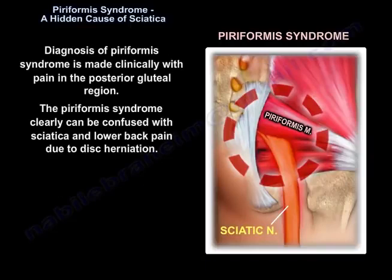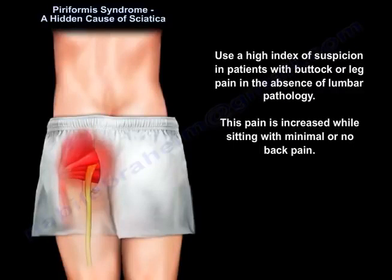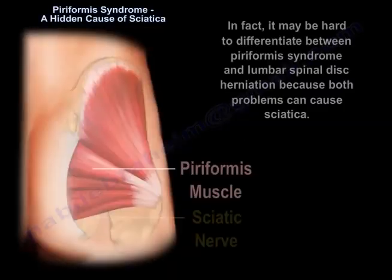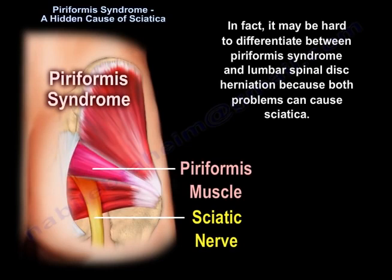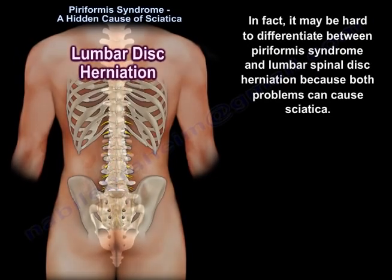Diagnosis of piriformis syndrome is made clinically with pain in the posterior gluteal region. Piriformis syndrome can clearly be confused with sciatica and lower back pain due to disc herniation. There should be a high index of suspicion in patients with buttock or leg pain in the absence of lumbar pathology. This pain is increased while sitting with minimal or no back pain. It may be hard to differentiate between piriformis syndrome and lumbar disc herniation because both problems can cause sciatica.